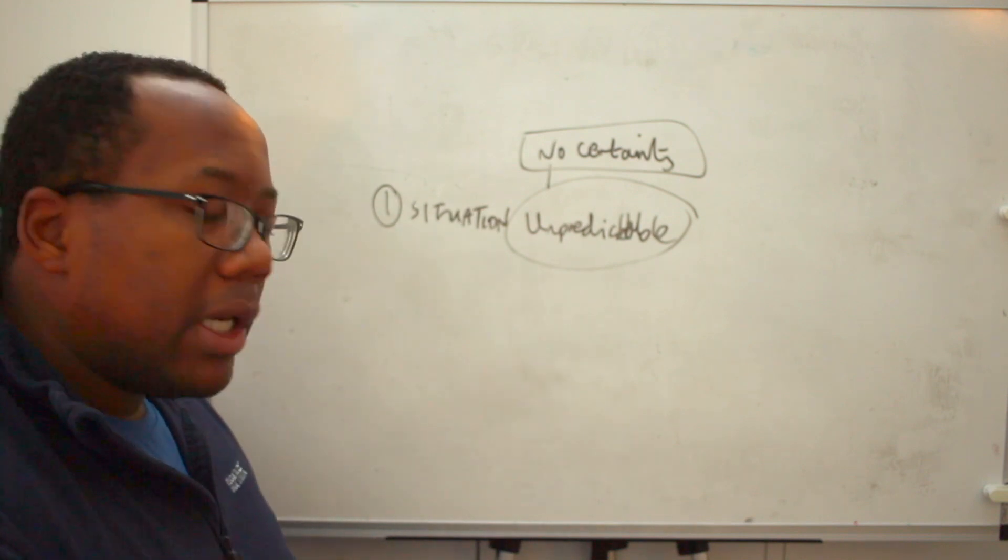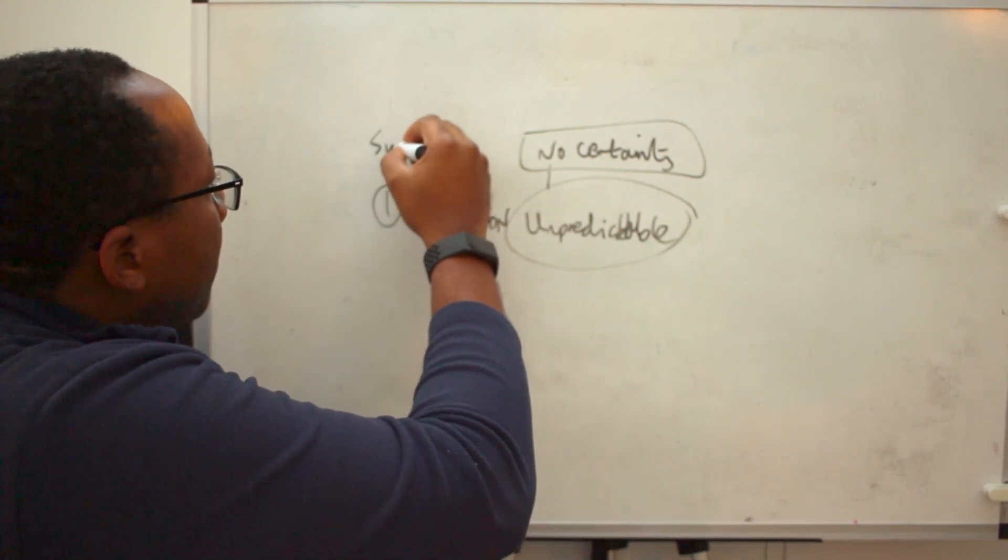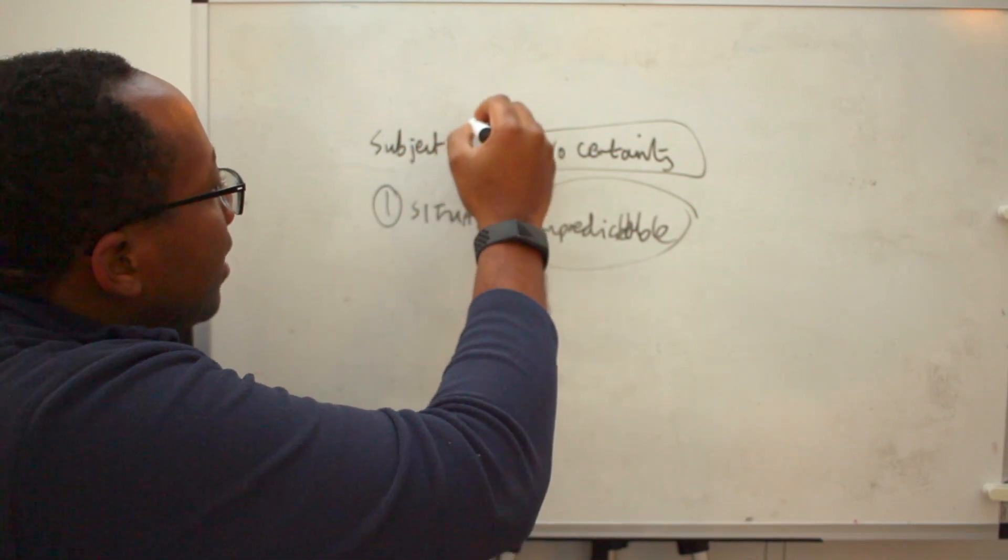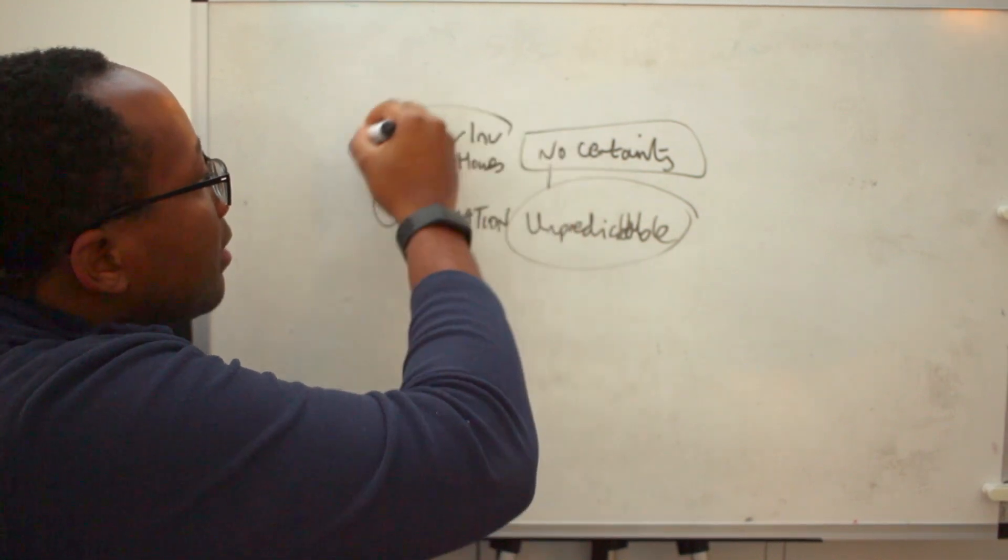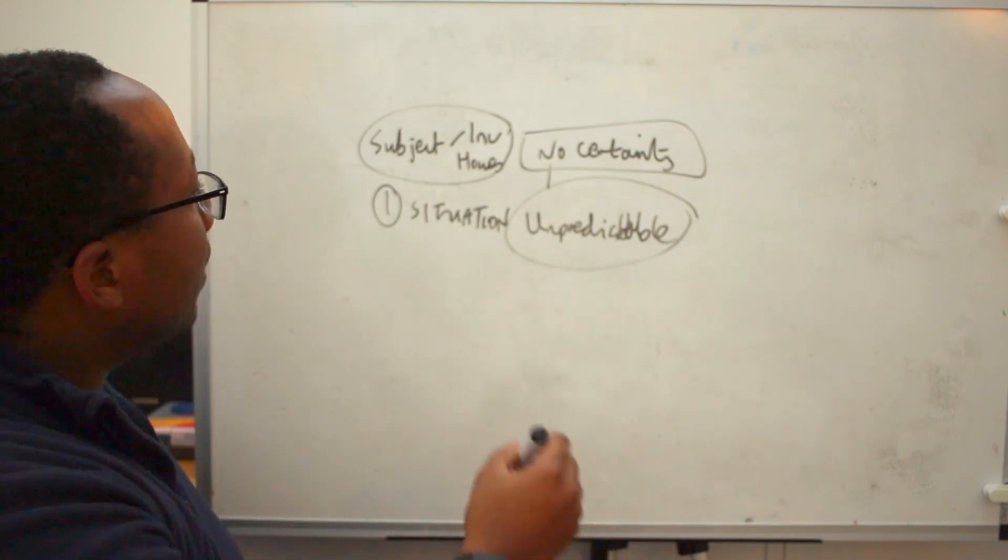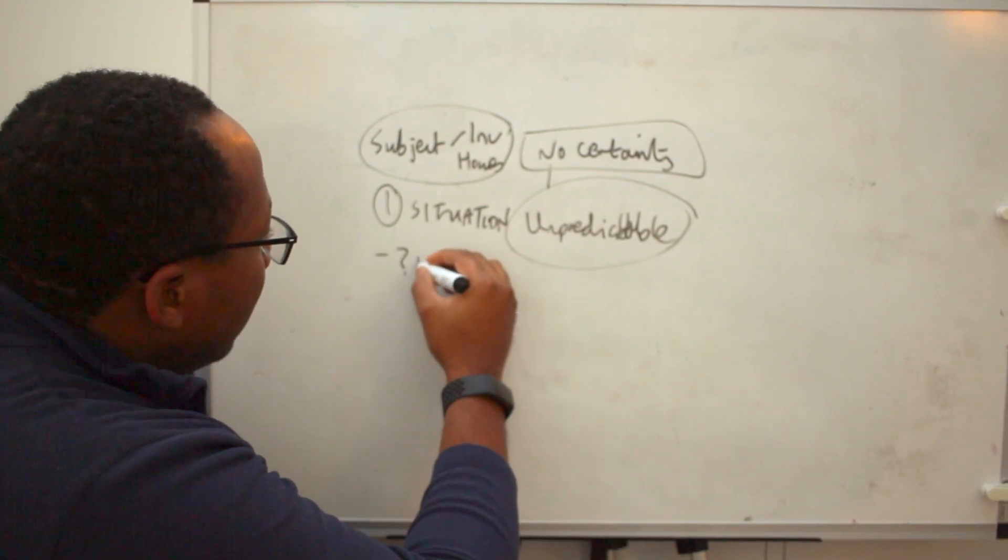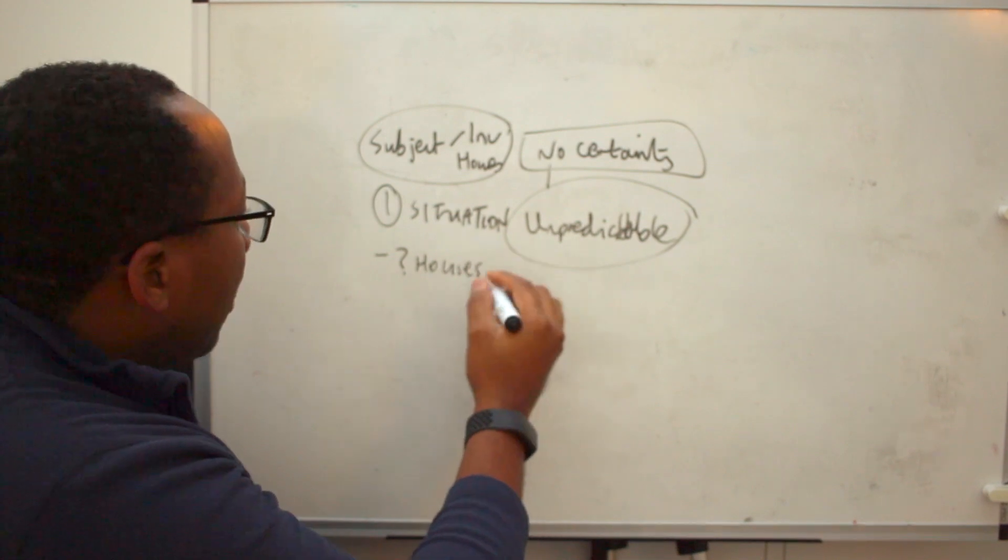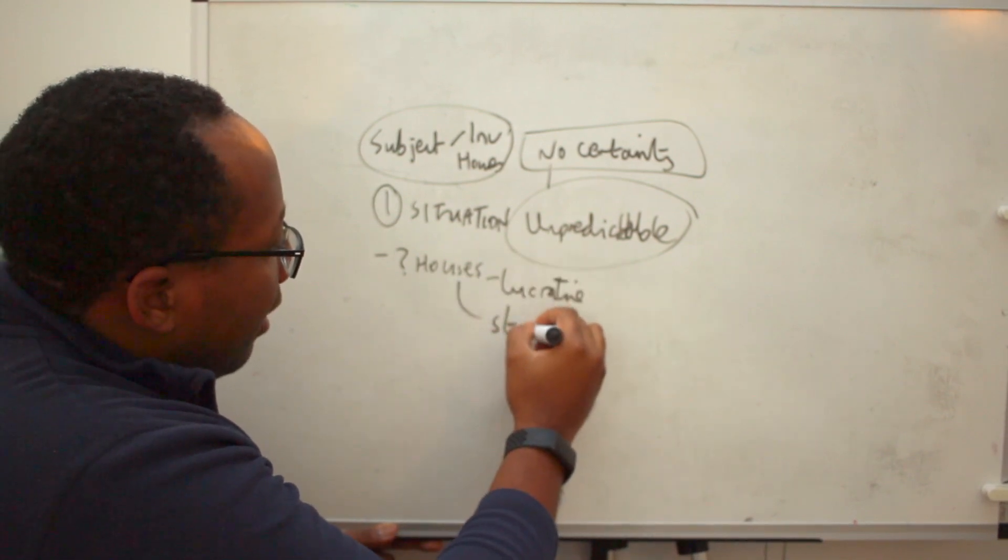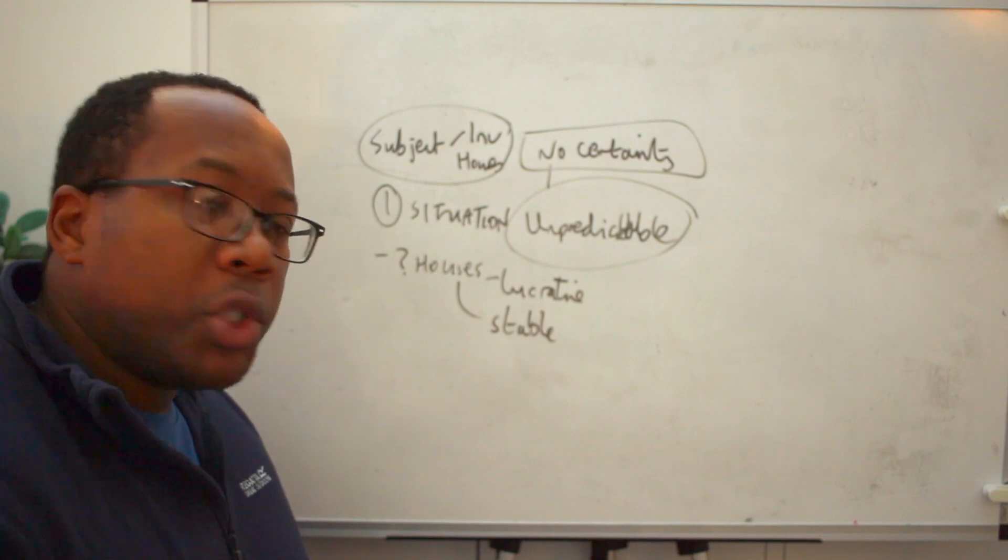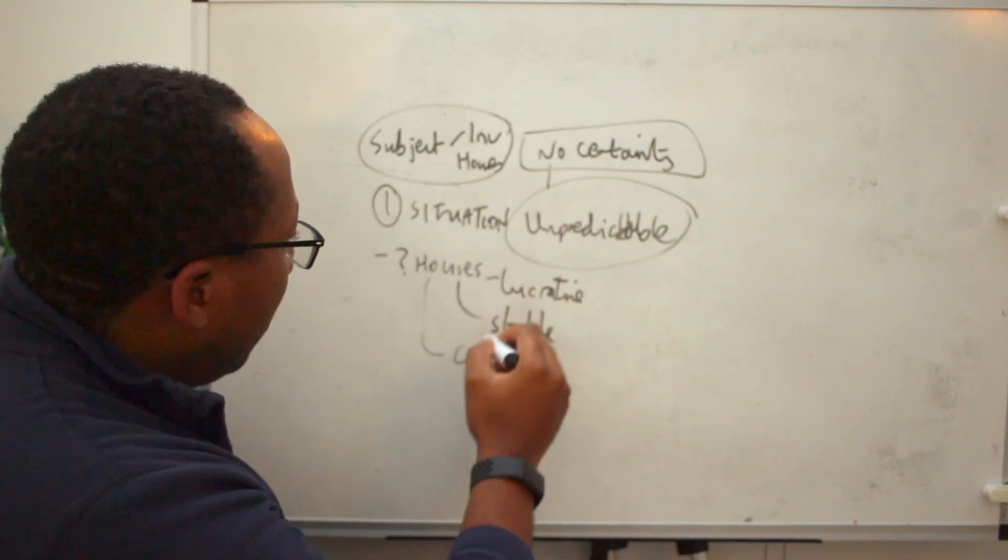Say for example I'm currently looking at whether to invest in rental property. So our subject, let's just put our subject up here, is investing in houses. Okay, so that's going to be our subject: investing in houses. The situation that we're looking at is we've got a question mark on whether houses are lucrative, we've got a question mark on whether they are stable, we've got a question mark on the cost, we've got a question mark on the returns.